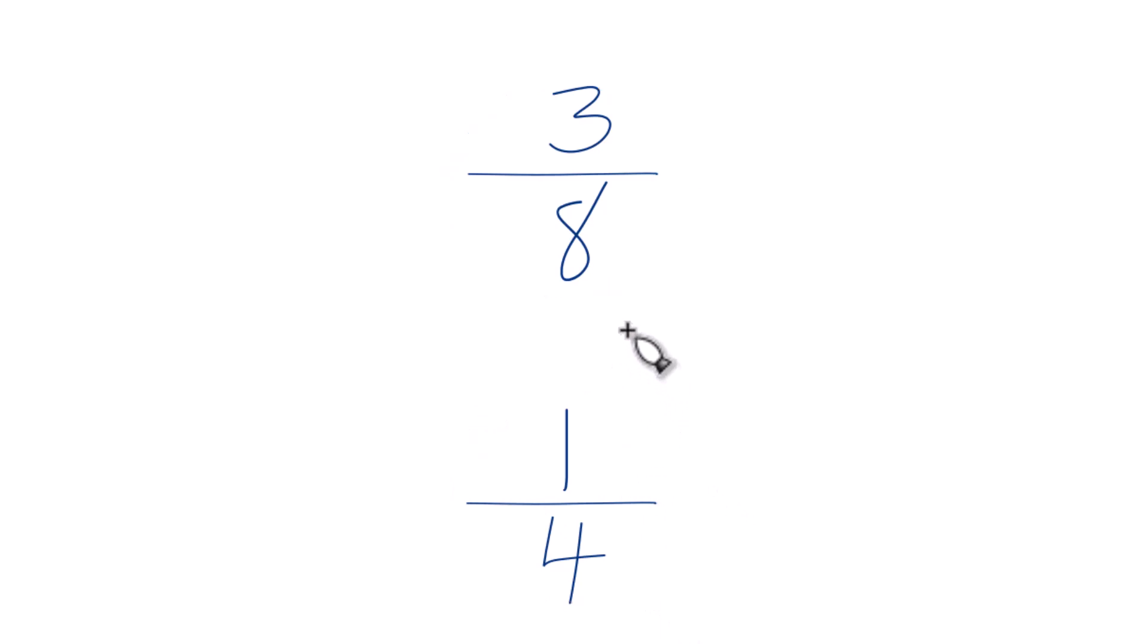So first off, what you could do, you could just divide 3 by 8 on your calculator, then divide 1 by 4 and compare the decimals. That would tell you which of these was bigger, 3 eighths or 1 fourth.